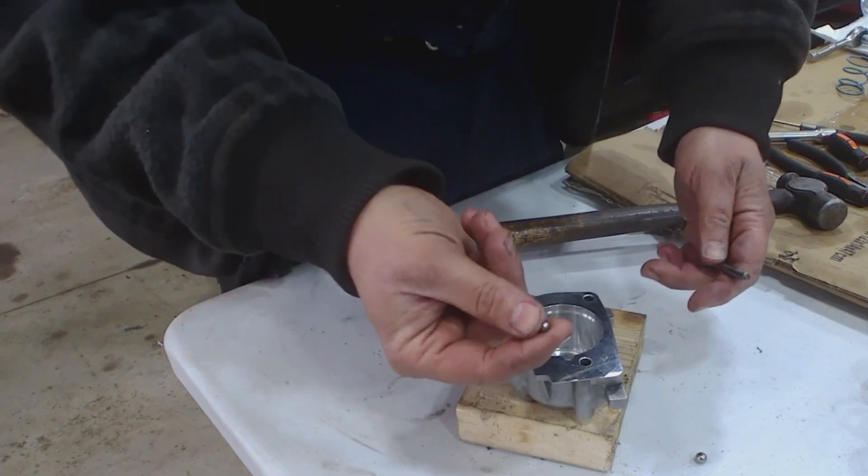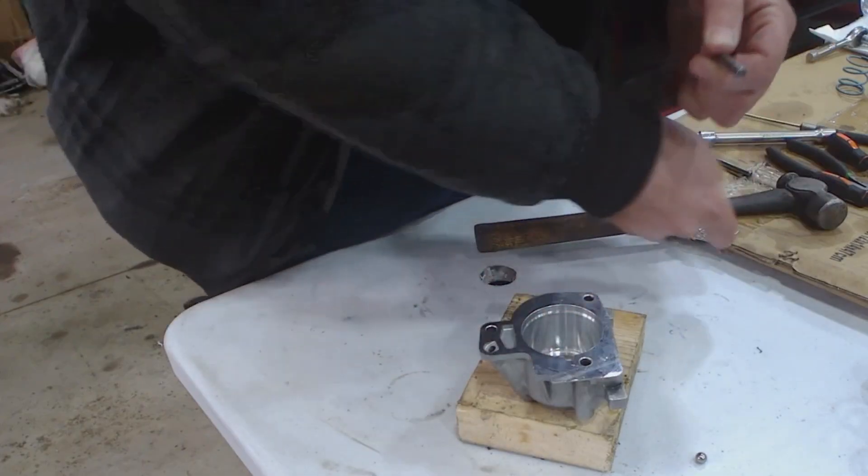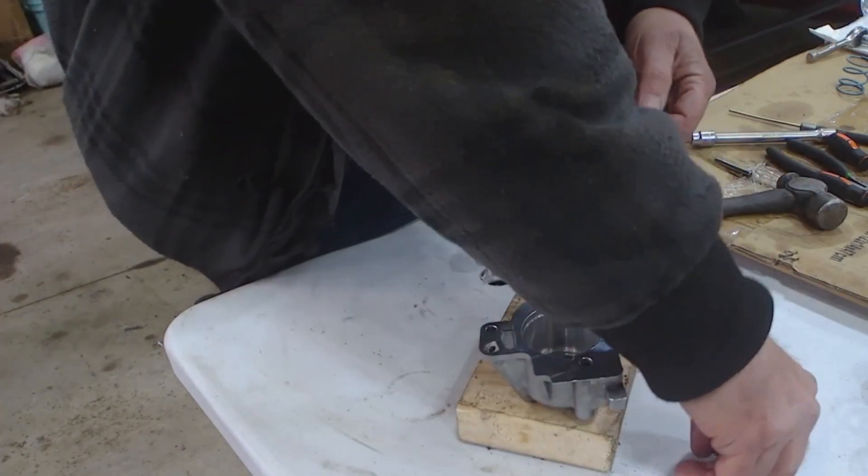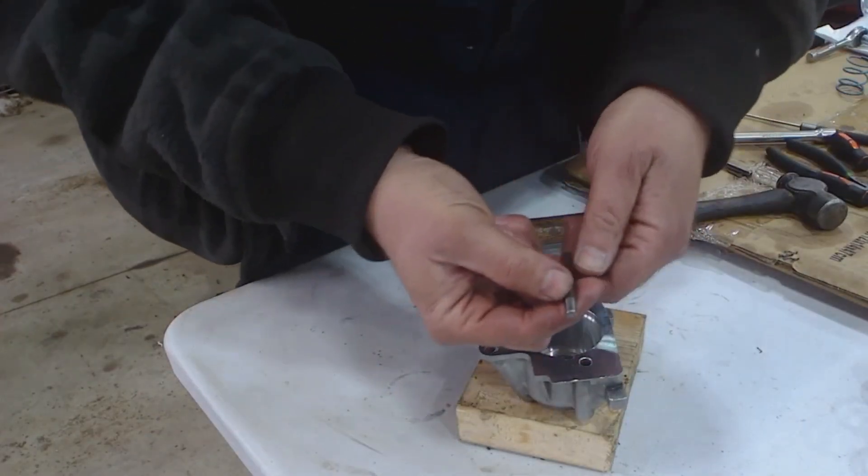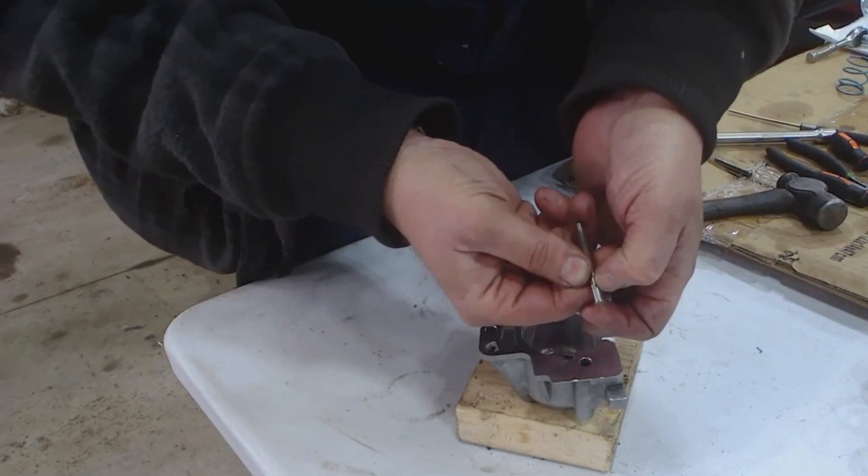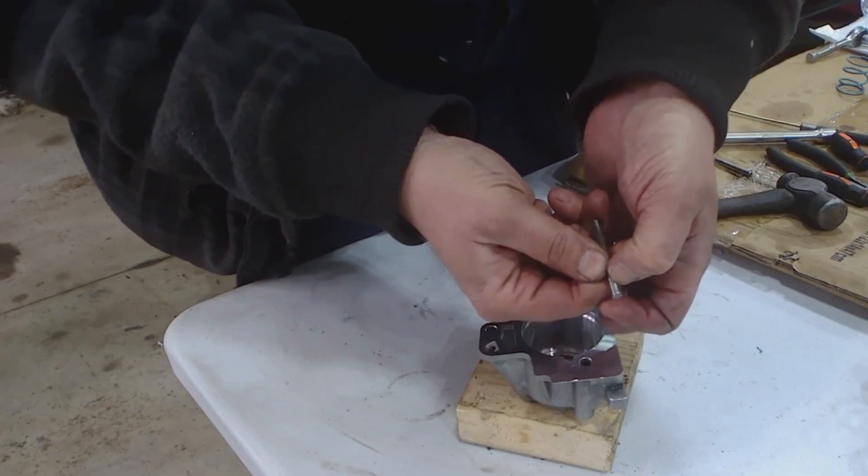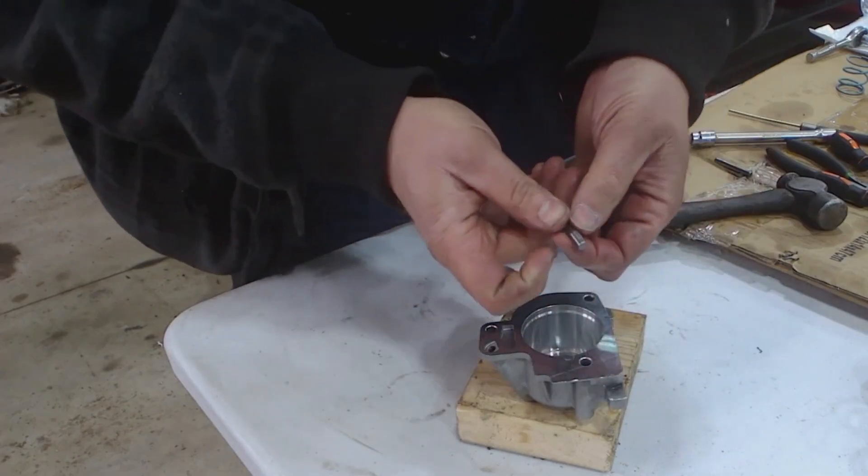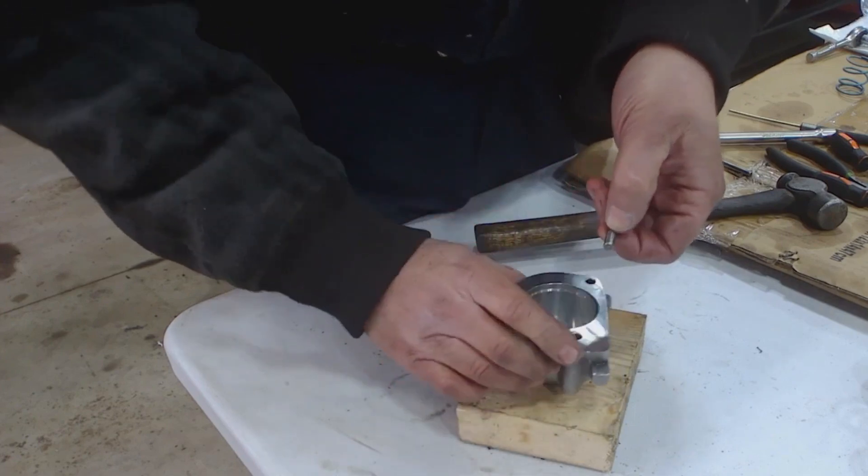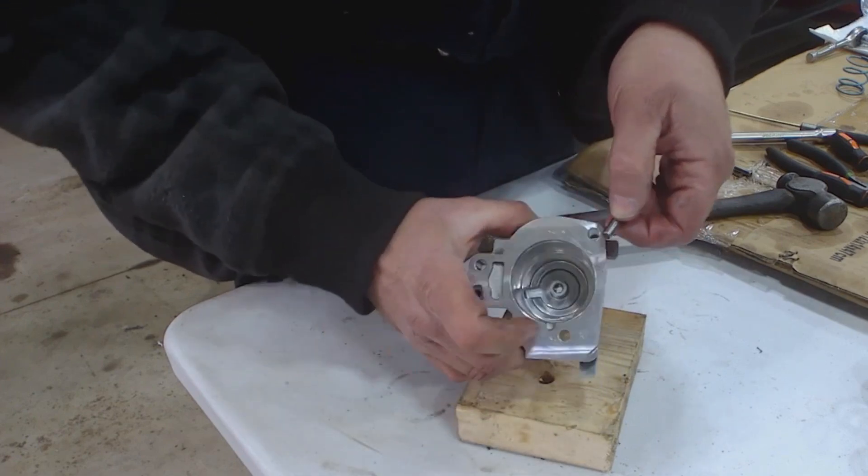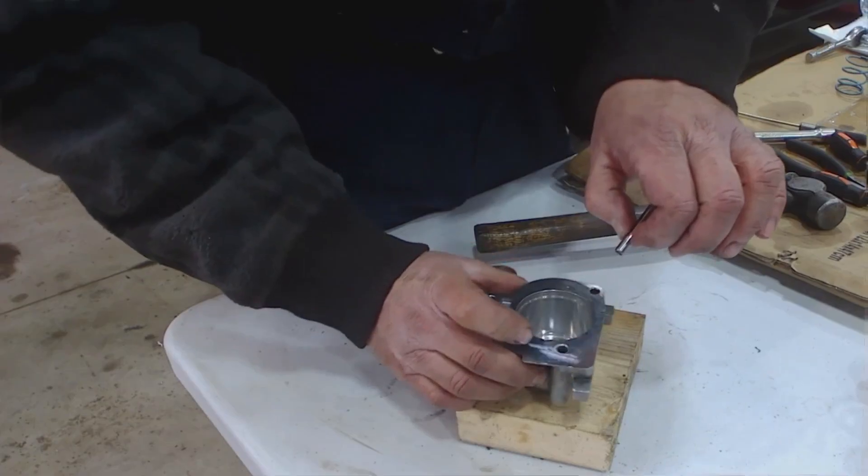You know what else is the right size? This thing. So what I like to do, forget the check balls, I'm just going to cut about maybe a quarter of an inch off the end of this pin and press it back in the hole. Smear it with red Loctite first, press it back in the hole, and I'll be right back.